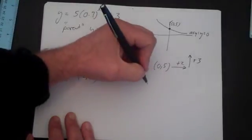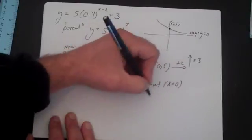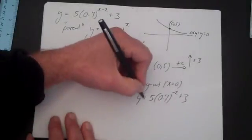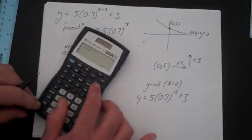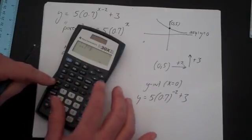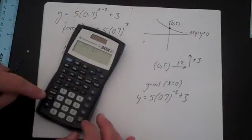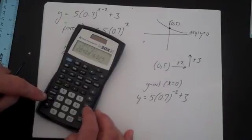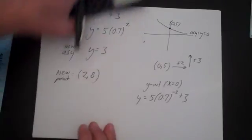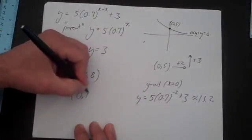Find another new point. I'm going to find the y-intercept. So let's set x equals 0. You get 5 times 0.7 to the minus 2 plus 3. Pretty complicated, but we have a calculator, so that won't be a problem. So that's 0.7 raised to the negative 2, and then you times that by 5, and then you add 3. So you get about 13.2. So the second point is 0, 13.2.